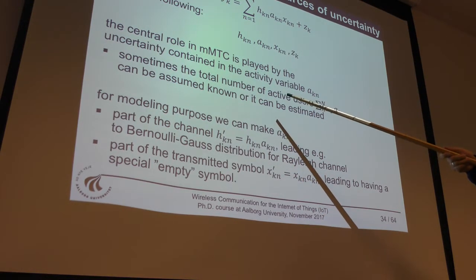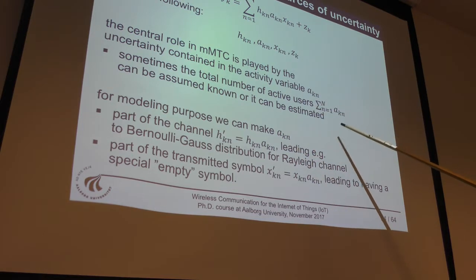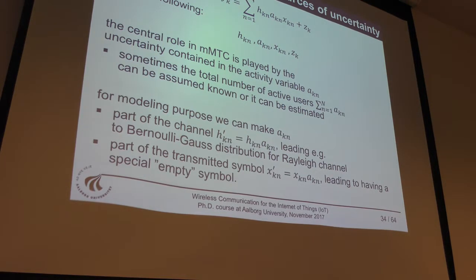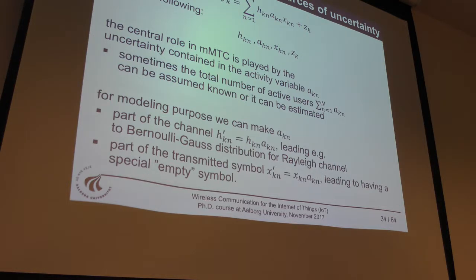The central role in massive machine-type communication is played by the uncertainty in akn — the unknown activation of users. Sometimes we can assume that the total number of active users can be known or estimated. You don't know exactly who is active, but you know roughly how many active users to expect based on arrival process statistics — for example, with high probability there will be 10 users or 50 users. You can also run a specific procedure to estimate how many are active without discovering exactly which users are active.